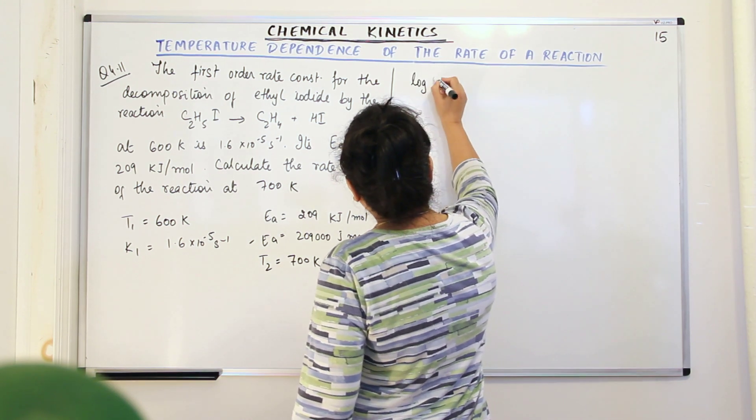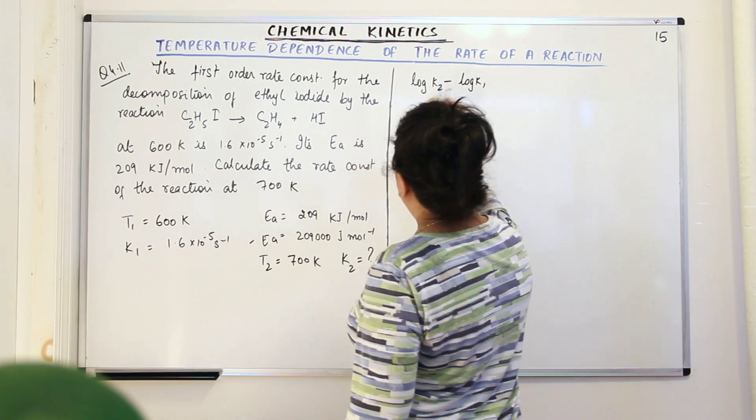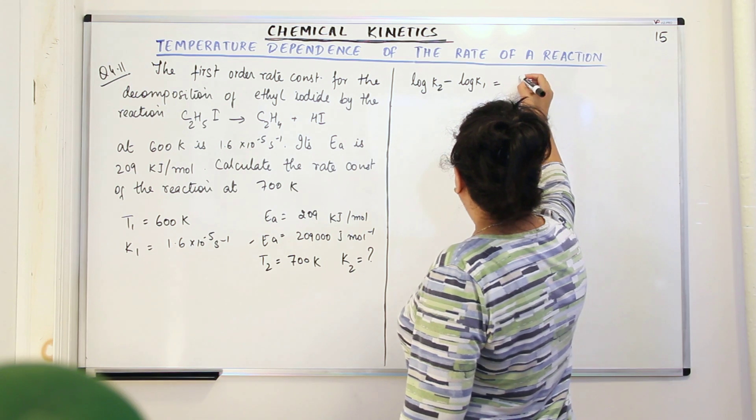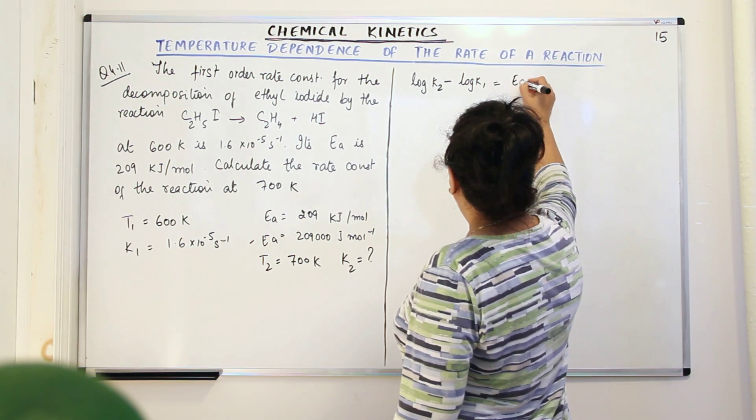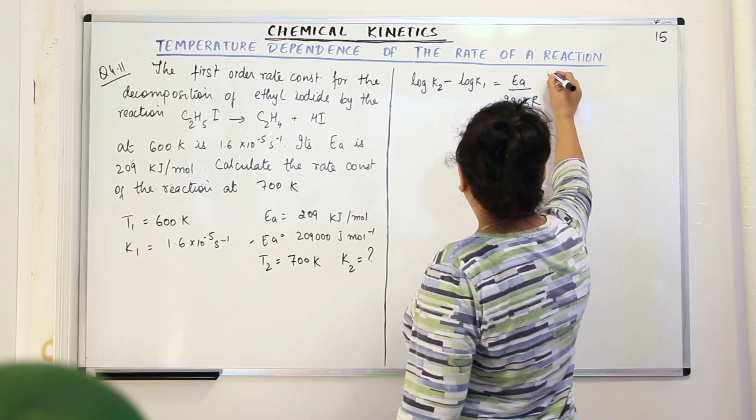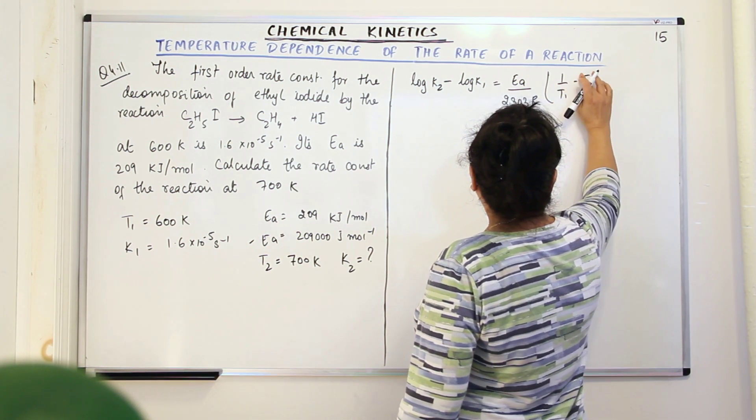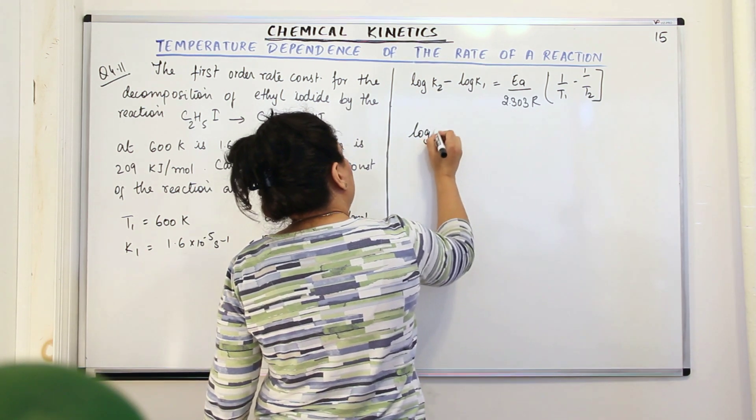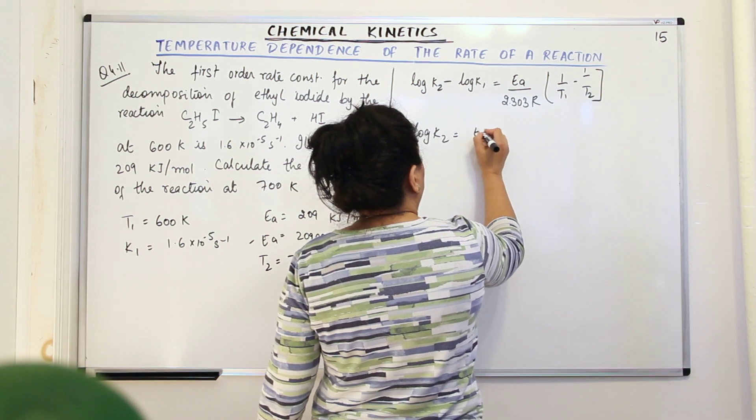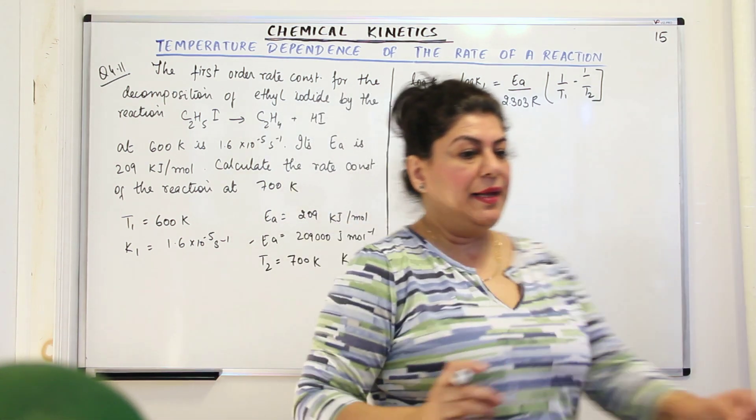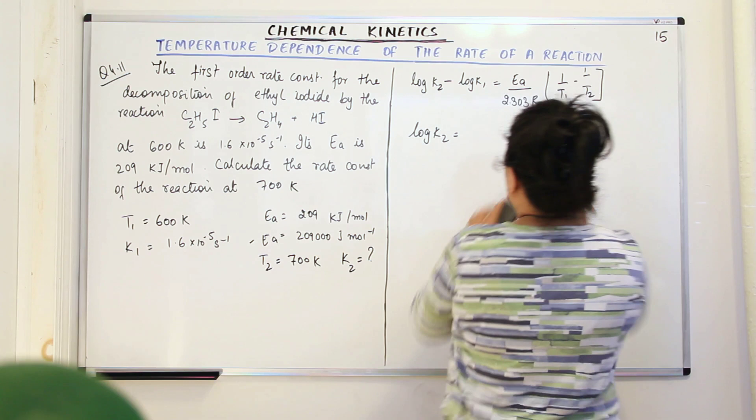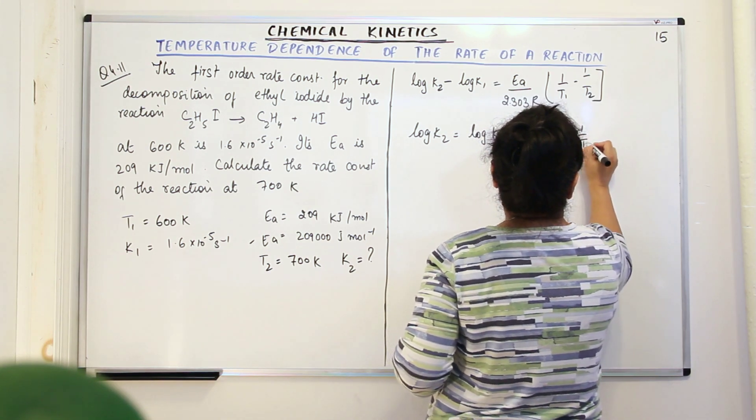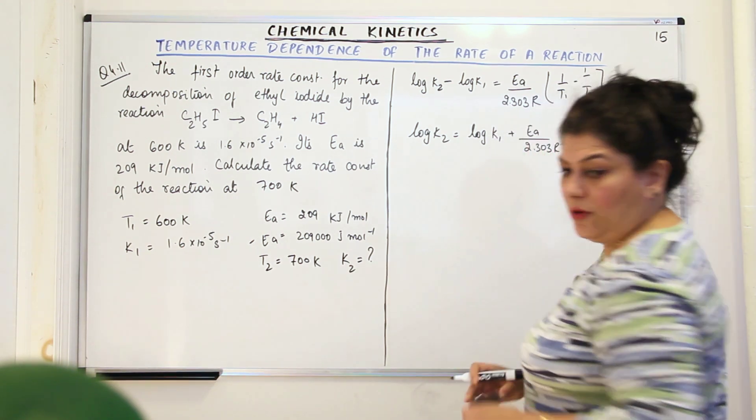So log K2 minus log K1. Why? Because we want to find out log K2. And from log K2, we need to find out K2. So log K2 minus log K1 is equal to Ea upon 2.303 R, 1 upon T1 minus 1 upon T2. That's the equation. So let us just solve it using this. So log K2 from this would become equal to log K1 plus Ea upon 2.303 R, 1 upon T1 minus 1 upon T2.